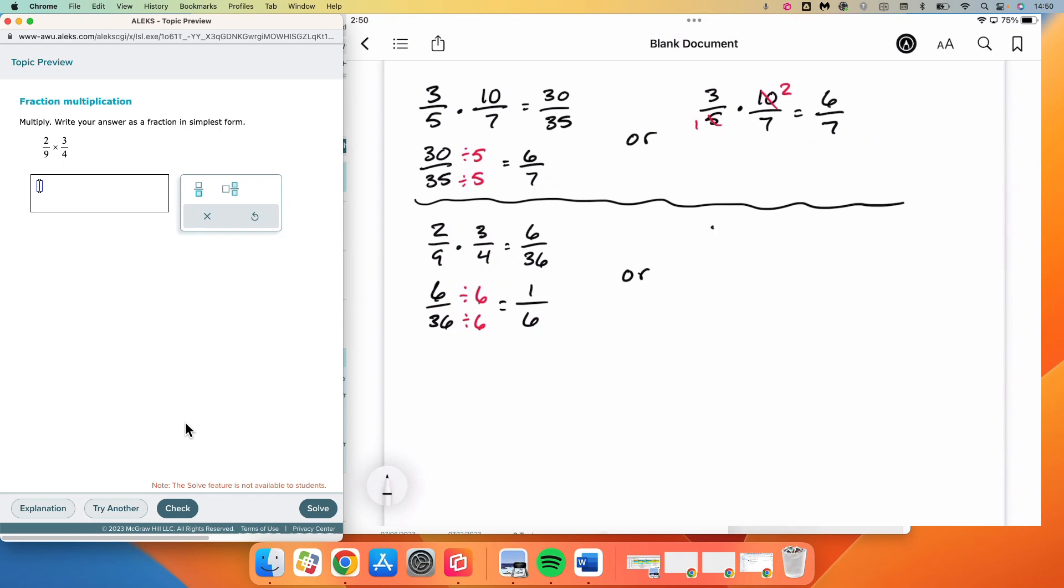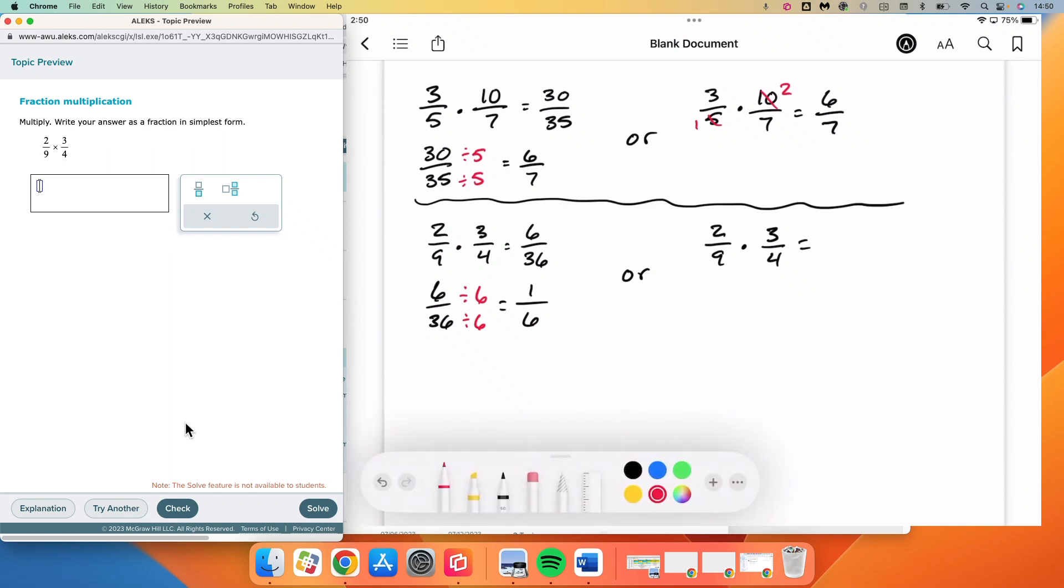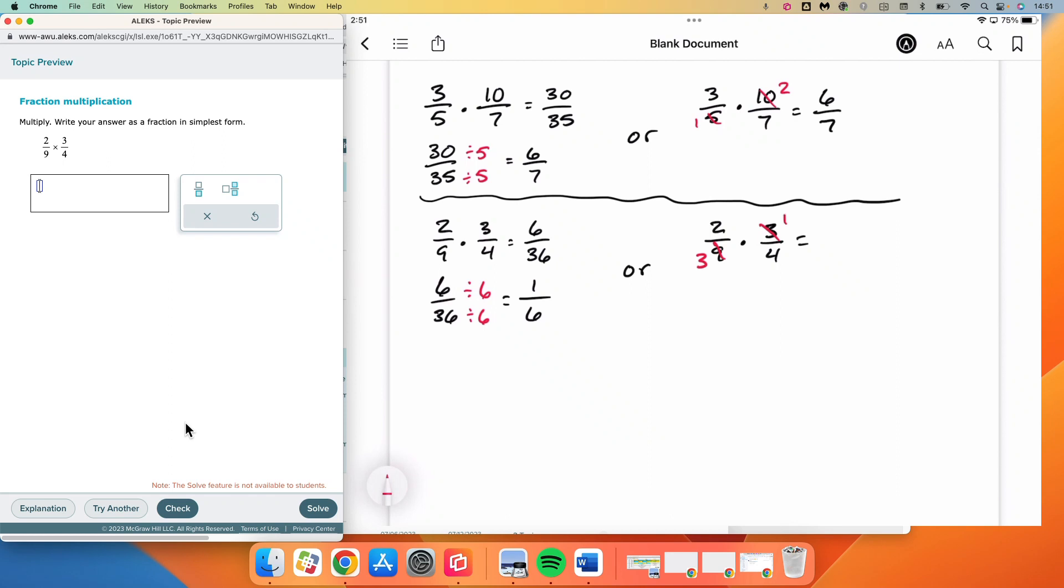Alternatively, we can do the cross-cancelling method. And we can notice that 9 and 3 both are divisible by 3. That gives us a 3, that gives us a 1. And we can notice that 2 and 4 are both divisible by 2. That gives us a 1, and that gives us a 2. So now in the numerator, we have 1 times 1 is 1, and in the denominator, we have 3 times 2 is 6, giving us 1 over 6.